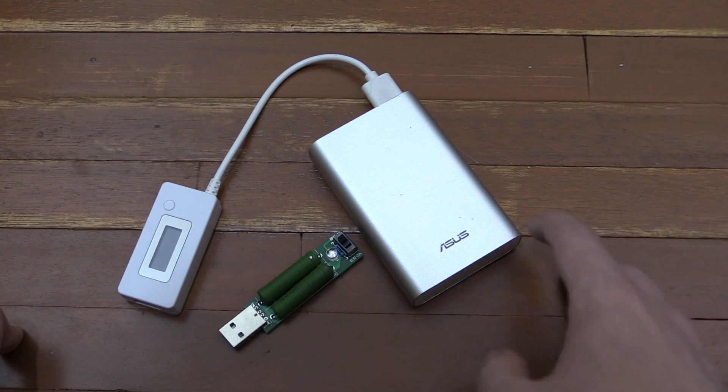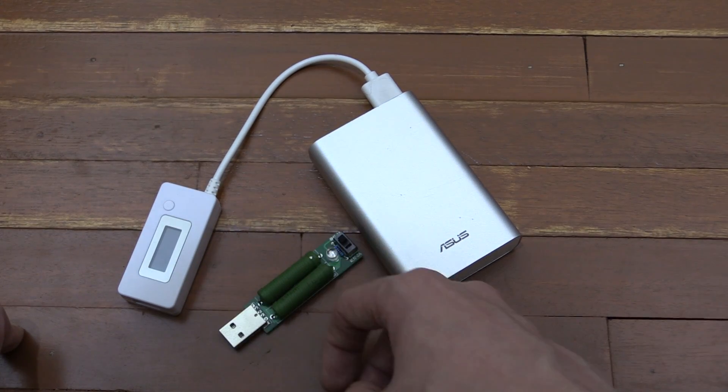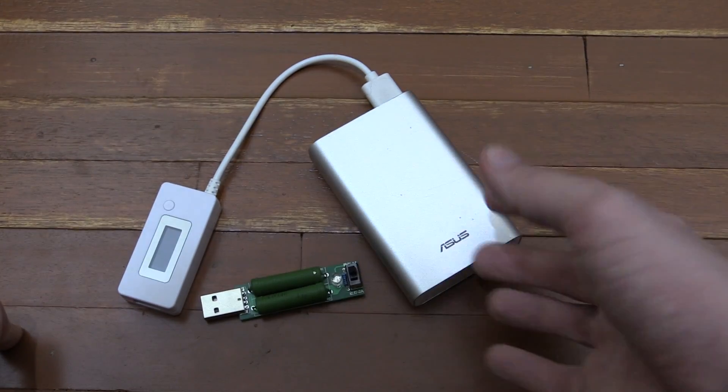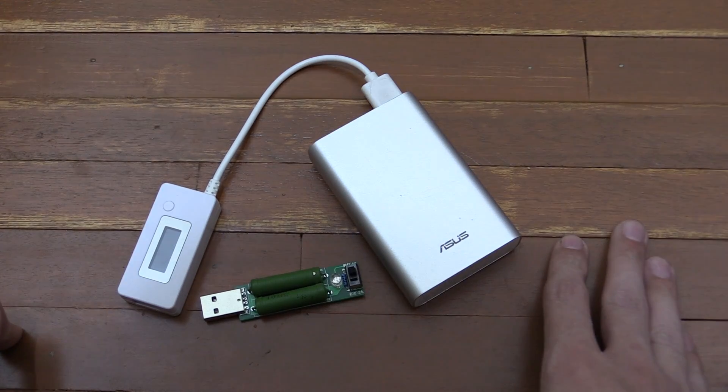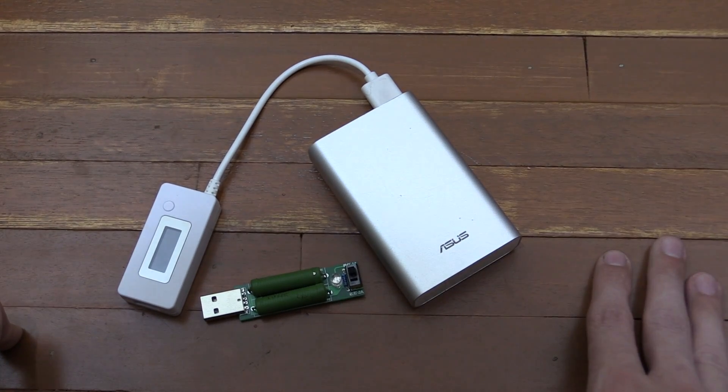So there you go. Now you know how to measure the actual capacity of your power bank using a watt meter which can do some logging over time and a dummy USB load like this. So if you found the video useful, please give a thumbs up and subscribe for future videos, and if you have any questions, put them in the comment section down below. Thanks for watching.